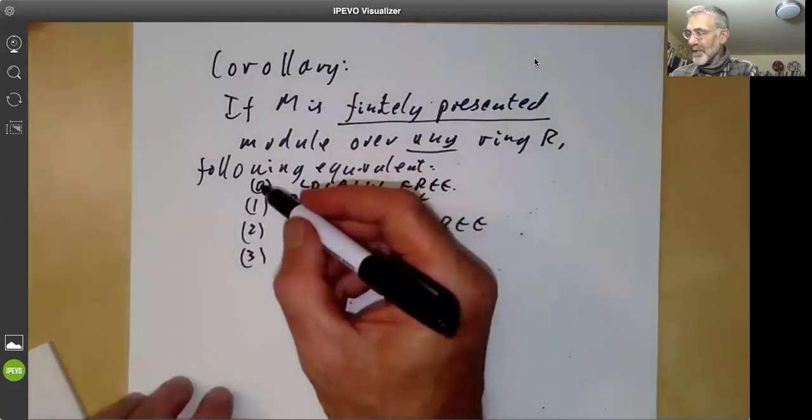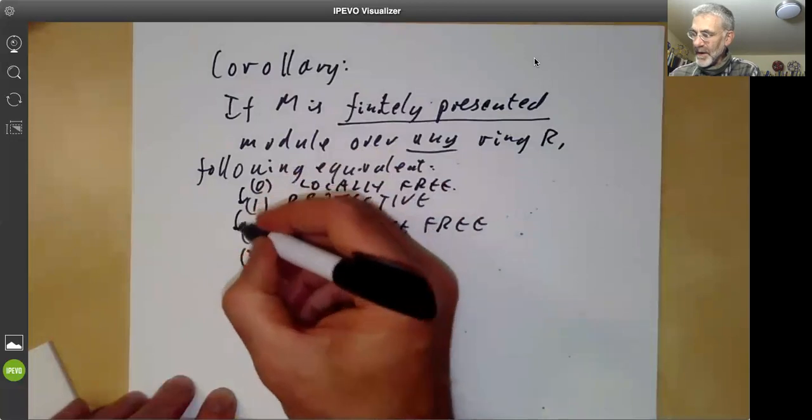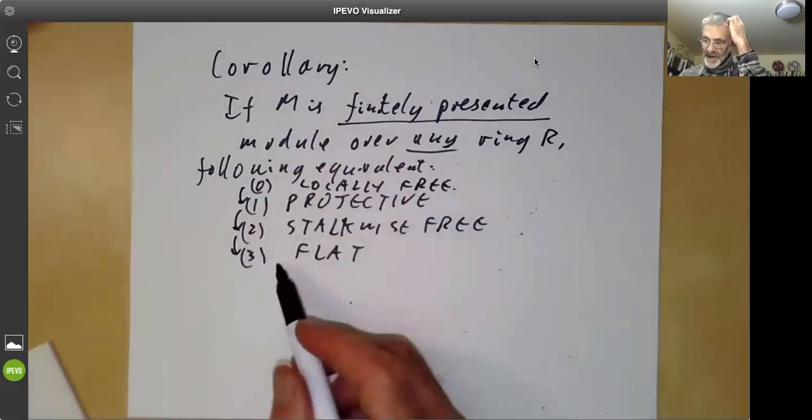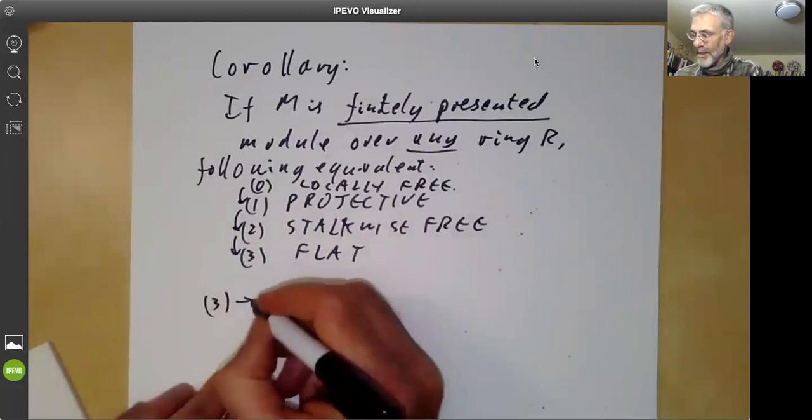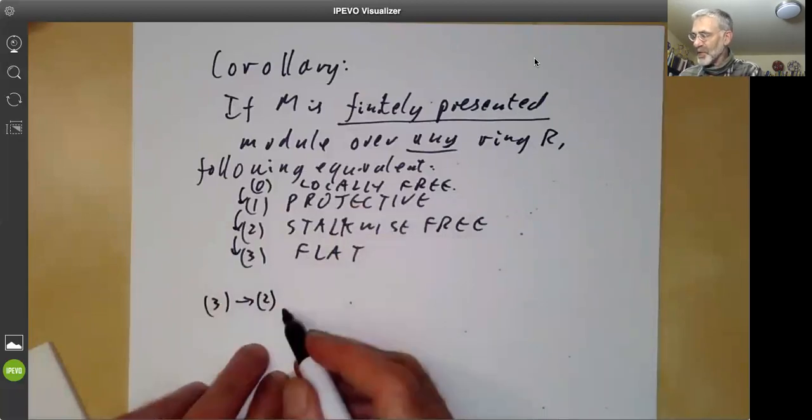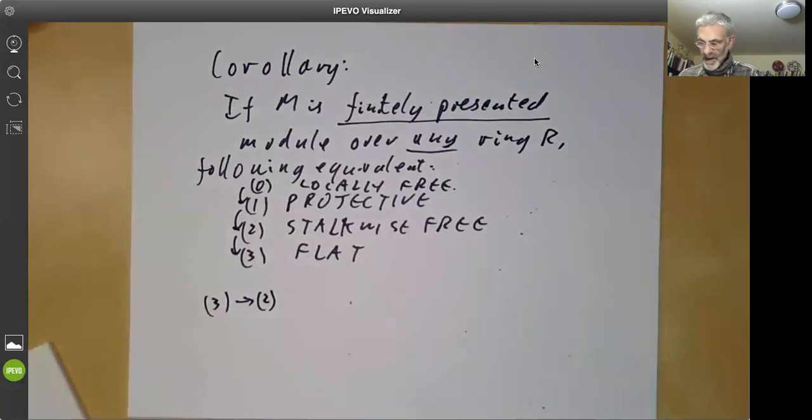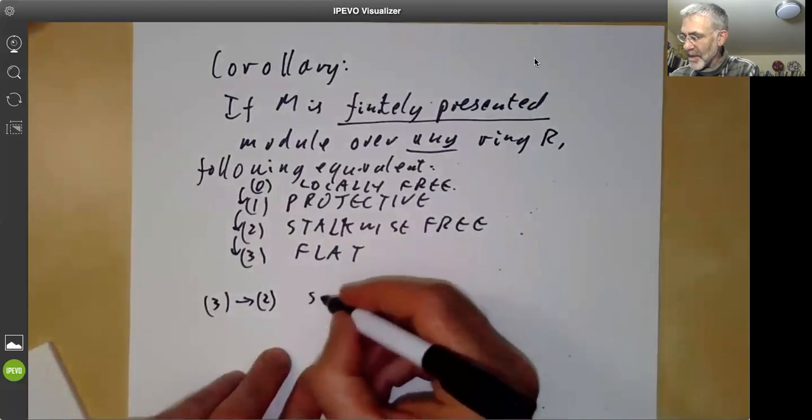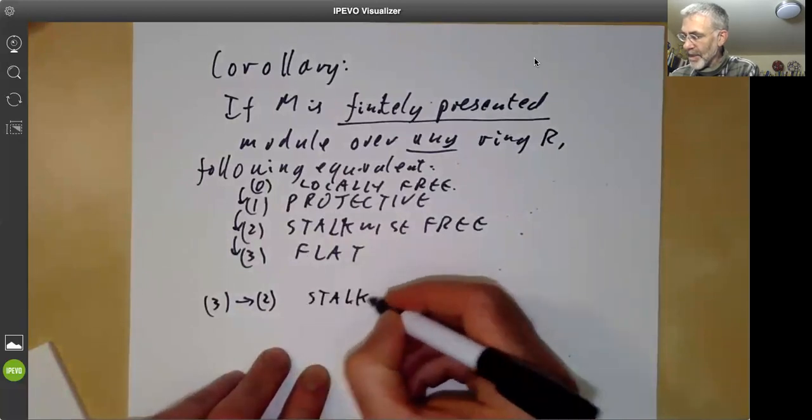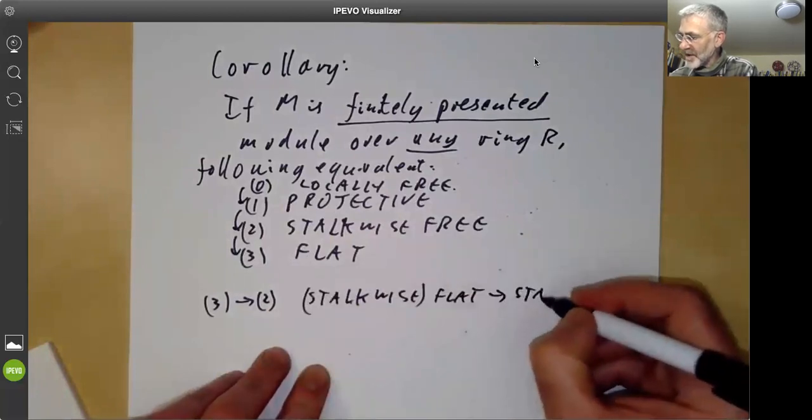And again, zero implies one implies two implies three we've sort of done earlier. And three implies two follows from the lemma we've just proved. We've seen that stalkwise flat, which is the same as flat, implies stalkwise free.